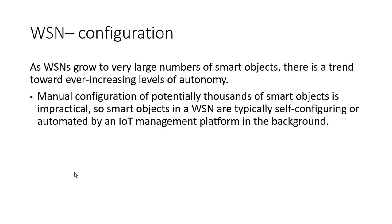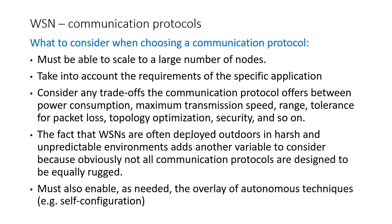Wireless sensor networks grow to very large numbers of smart objects. There is a trend towards increasing autonomy — manual configuration of potentially thousands of smart objects is impractical. Smart objects in WSNs are typically self-configuring or automated by an IoT management platform. When choosing a communication protocol for sensor networks, it must be able to scale to a large number of nodes — for example, 100 to 10,000 nodes — while maintaining the same performance.